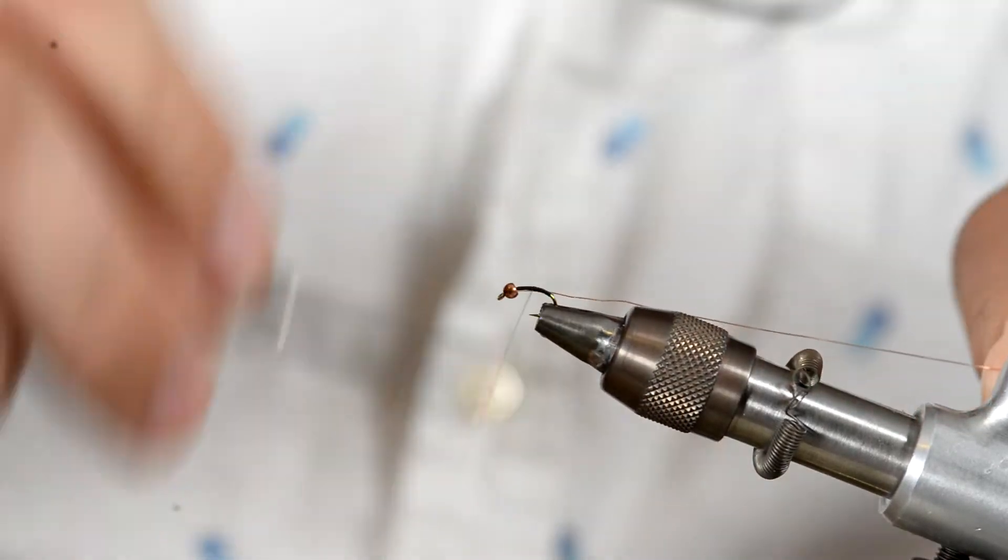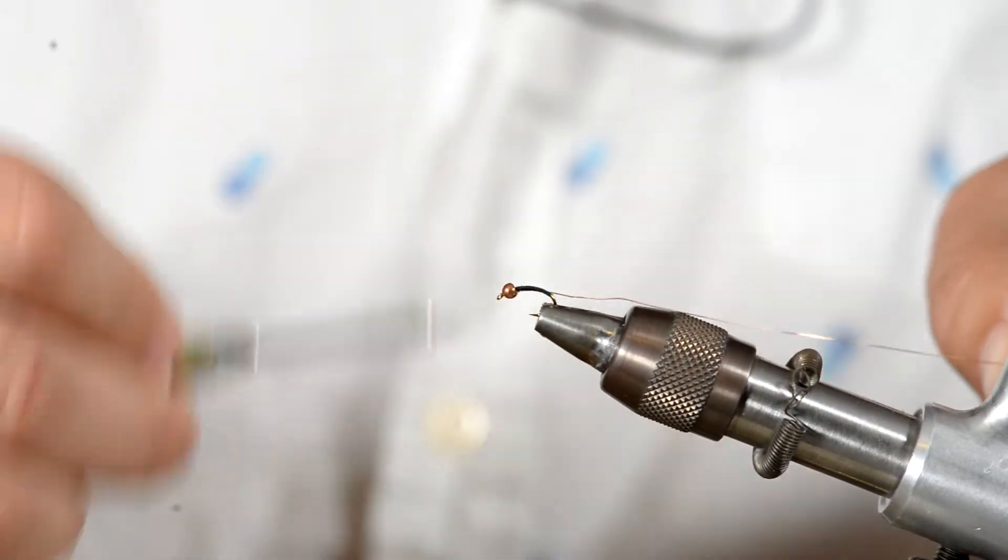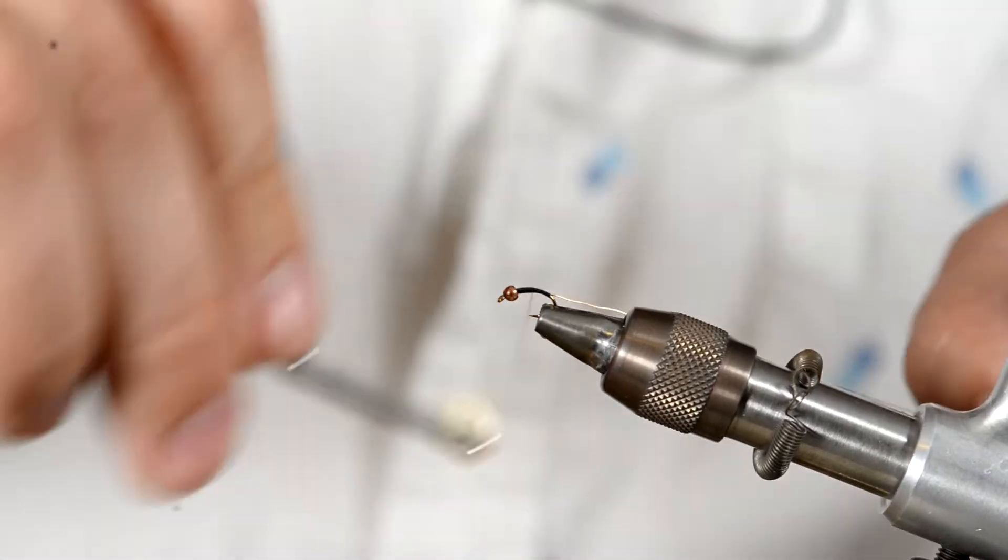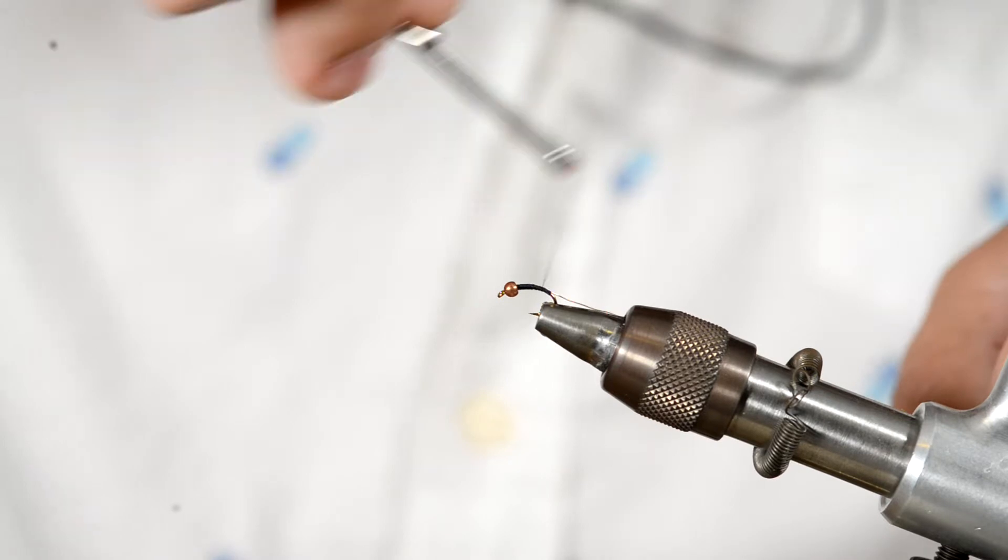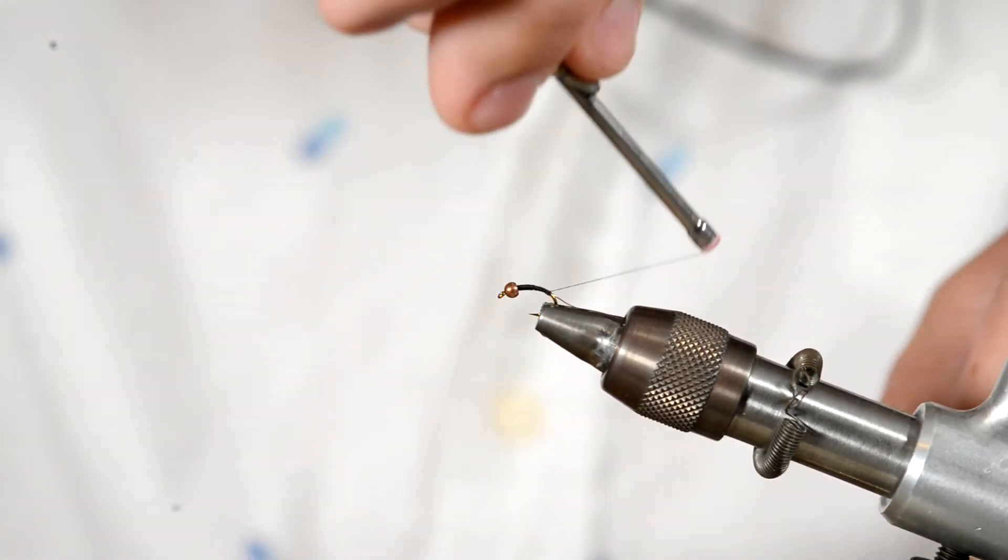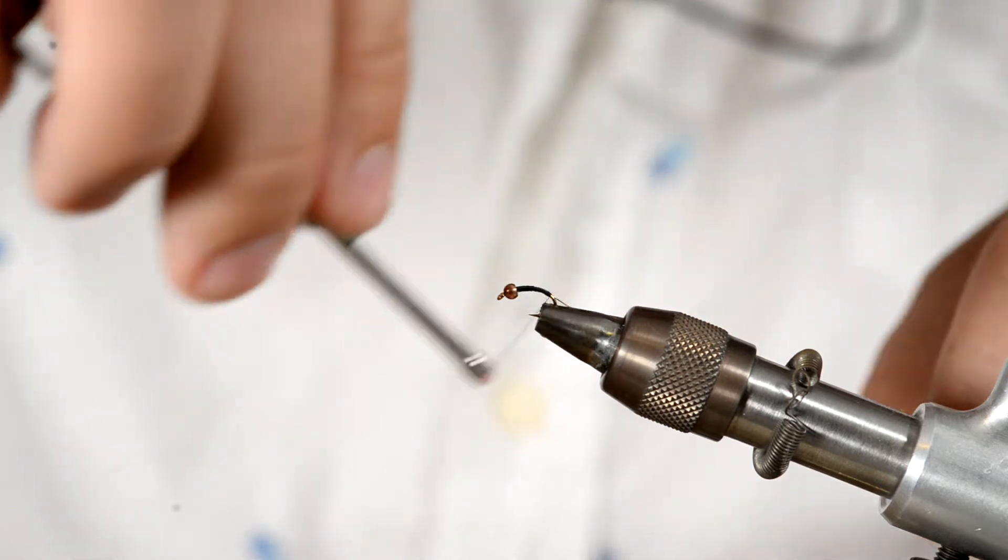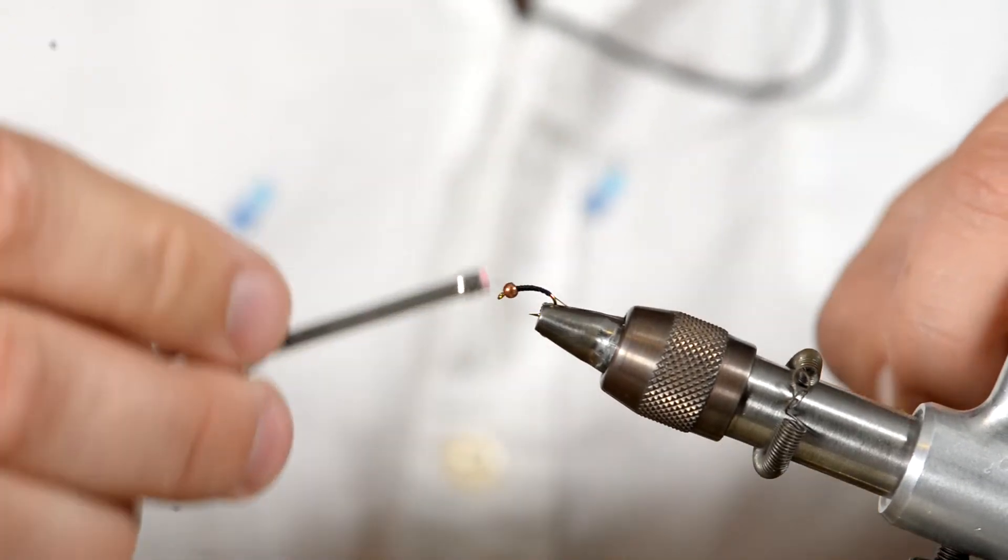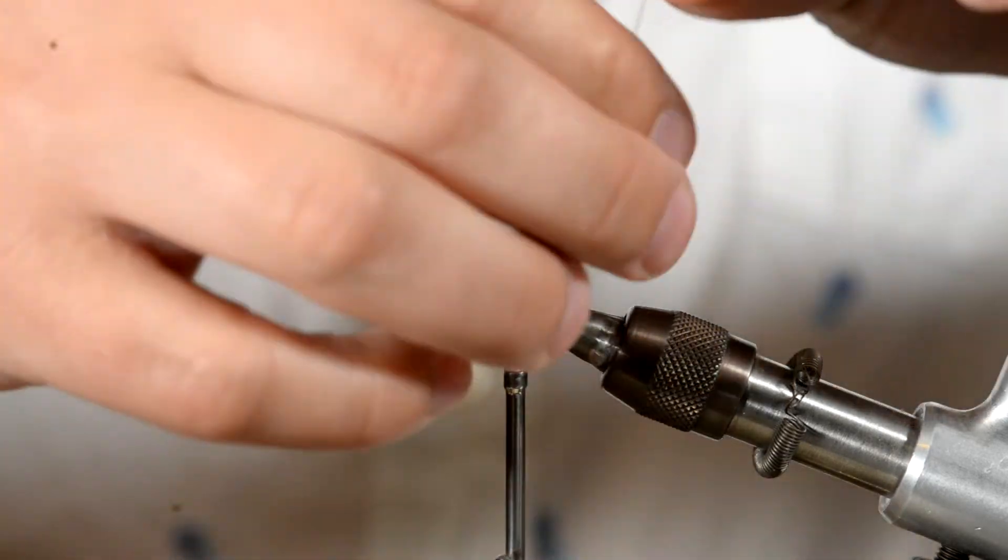I always like to put it on the side of the hook that's facing me. It just makes it a little bit easier when working with the wire. That way I can see everything. And I'm just using my thread to make sure that it's nice and secure. Now bring your thread all the way up to just behind the bead and let it rest.